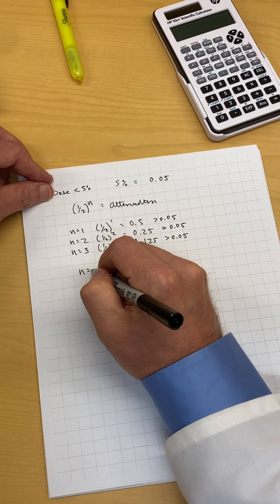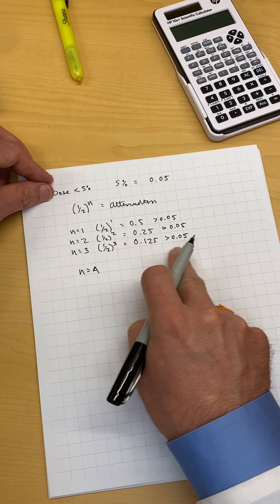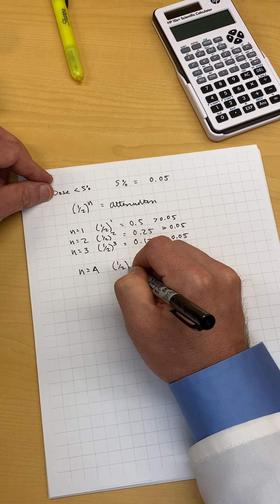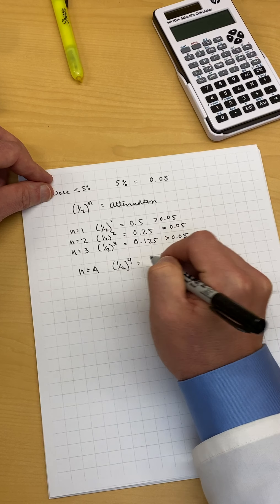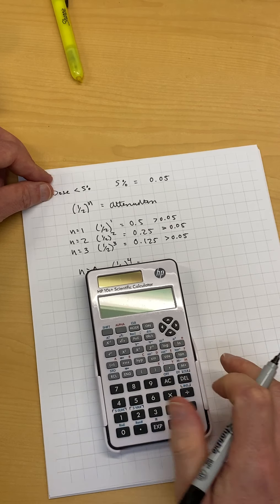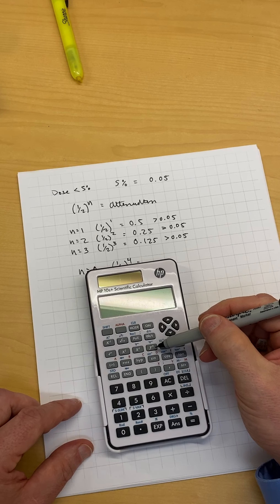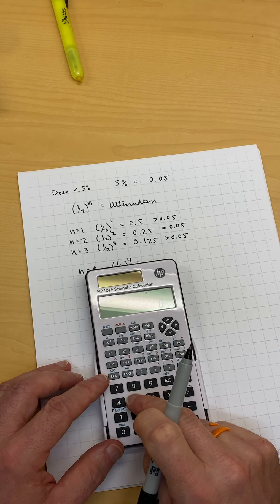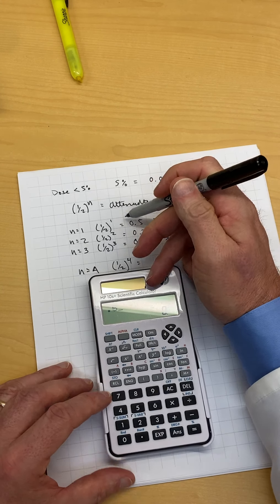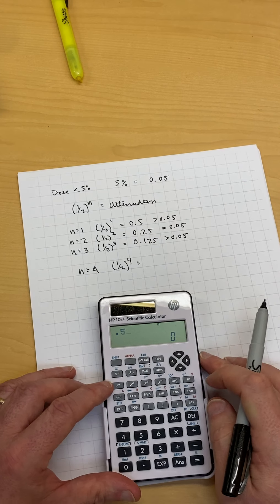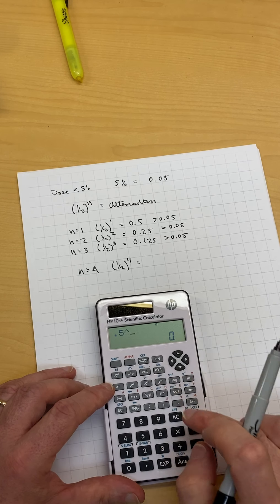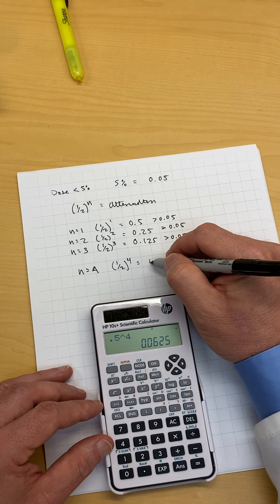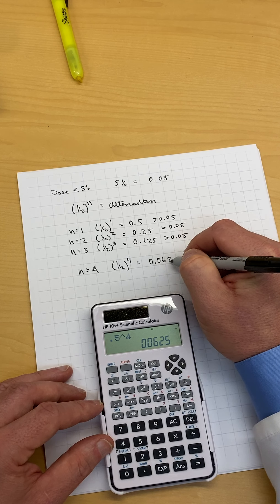We're going to do n equals four. This is getting tedious so I'm going to use this formula. One half to the four equals how much? I'm going to pull out the calculator because we got this y to the x button on our calculator. So I'm going to do 0.5 to the fourth, x-y to the four, equals 0.0625.